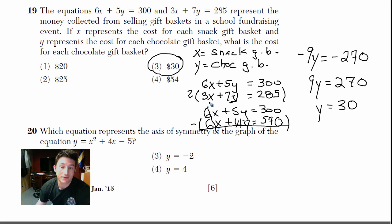The main thing here: write the two equations, stack them, then multiply or divide as needed to make one variable's coefficients equal so they cancel. In this case I multiplied the bottom equation by 2.